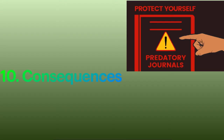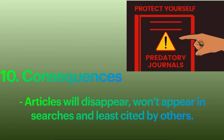Lastly, what are the consequences when we publish in predatory journals? Mostly the articles will disappear and won't appear in searches by other researchers, and hence they will be least cited by other authors.